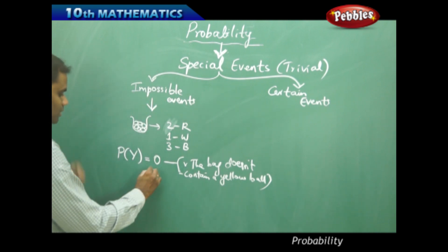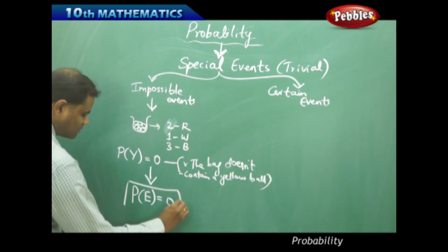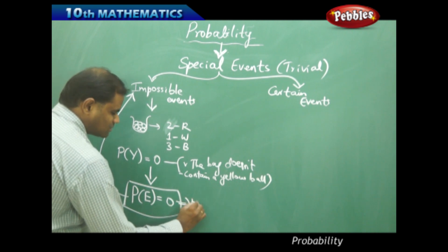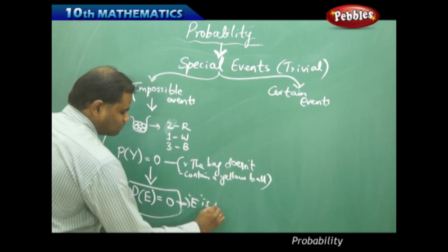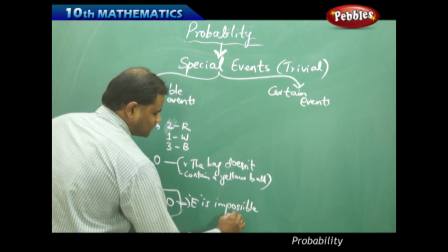Therefore, usually for impossible events, P(E) = 0. Then we say the event E is an impossible event. For impossible events, P(E) = 0 implies E is an impossible event.